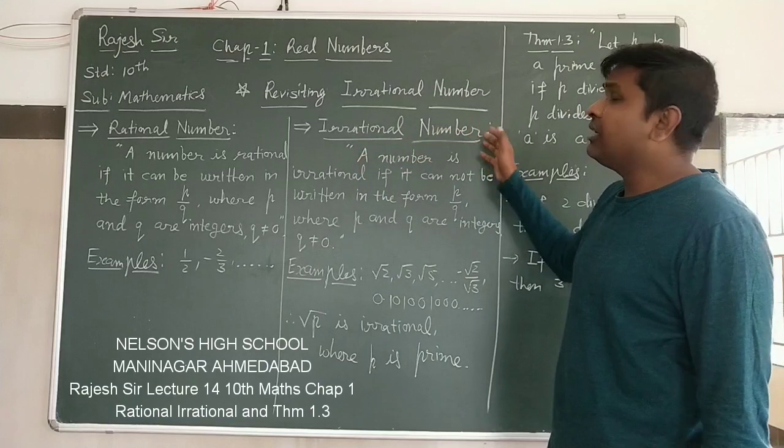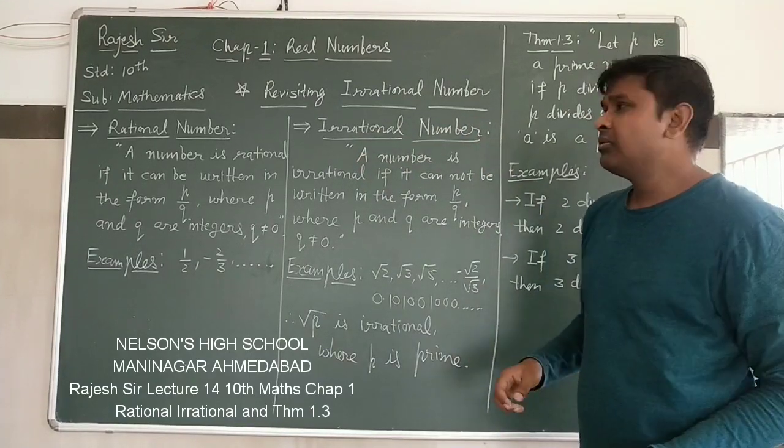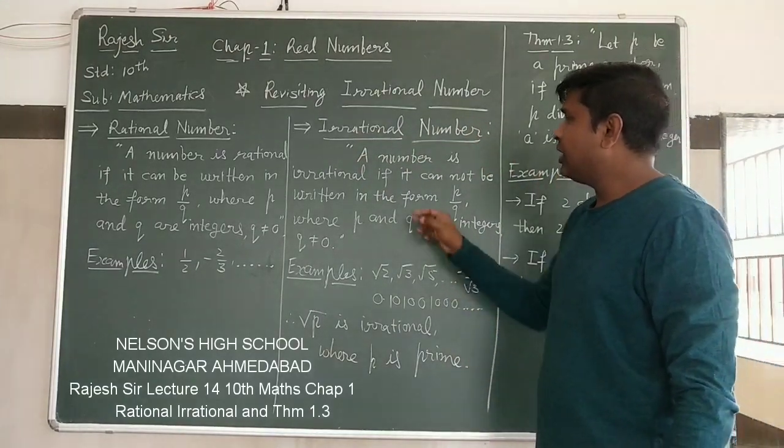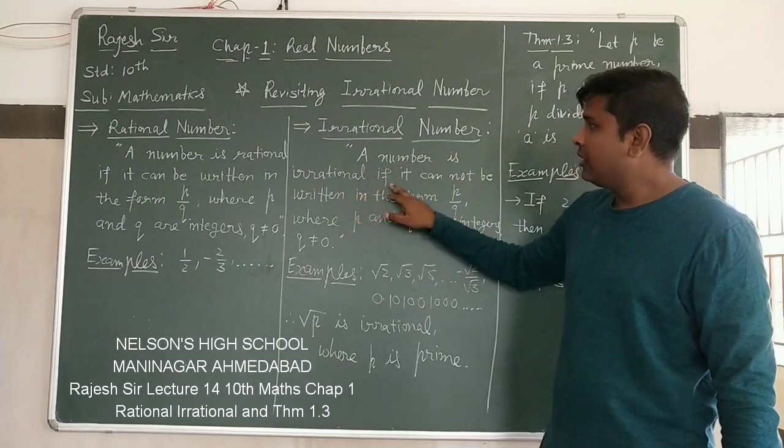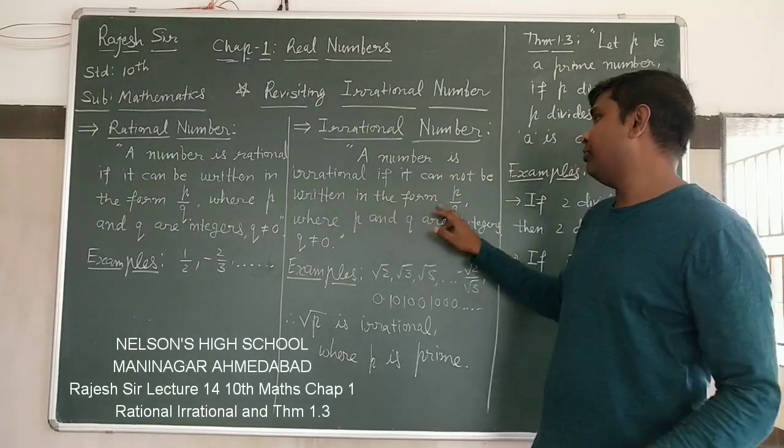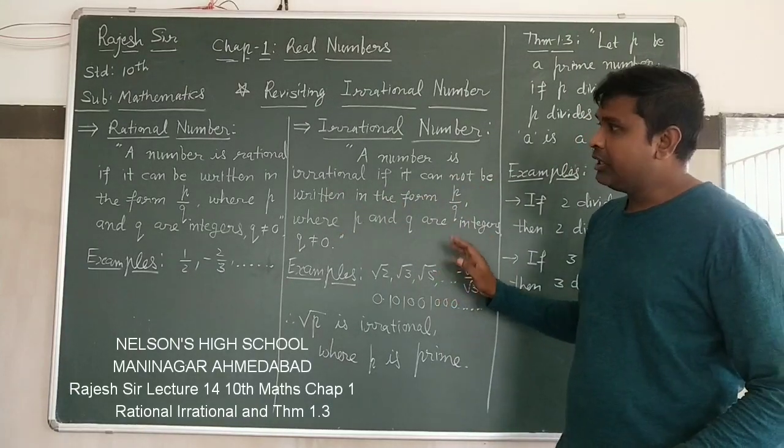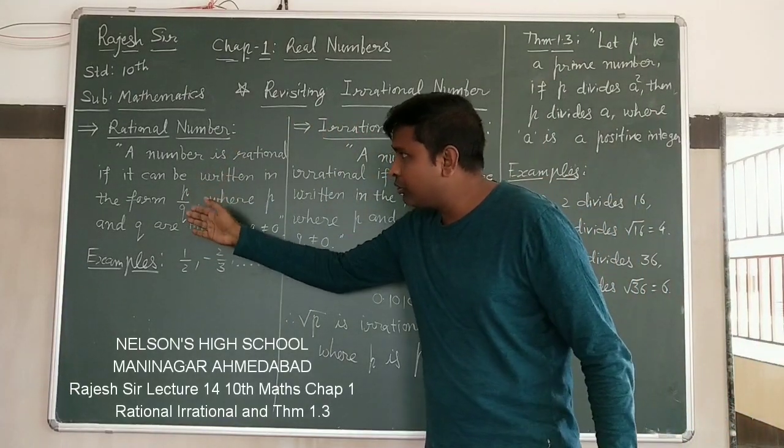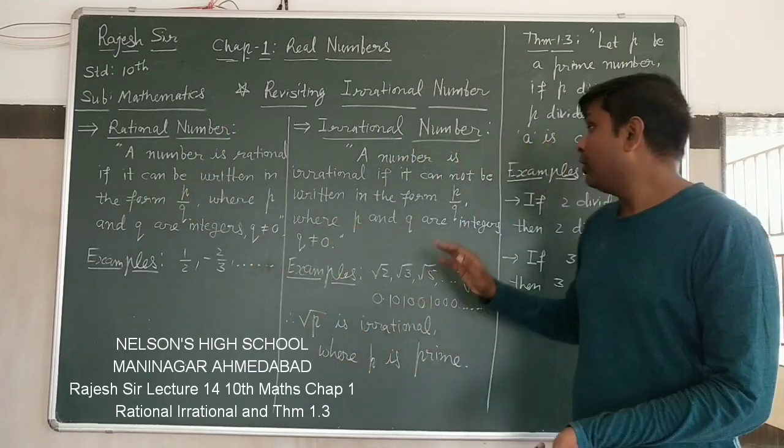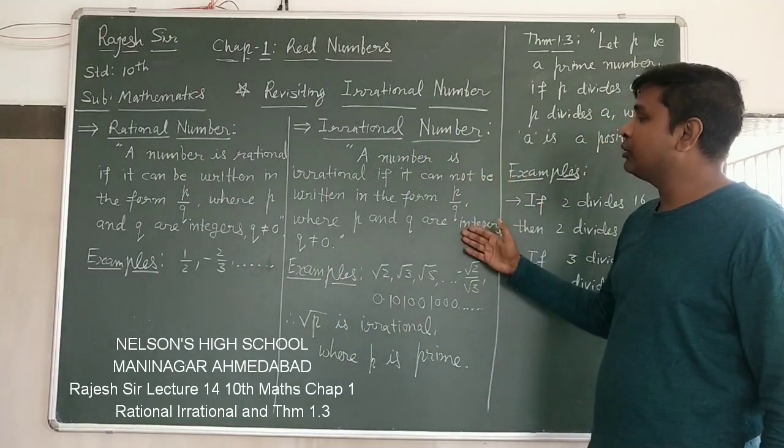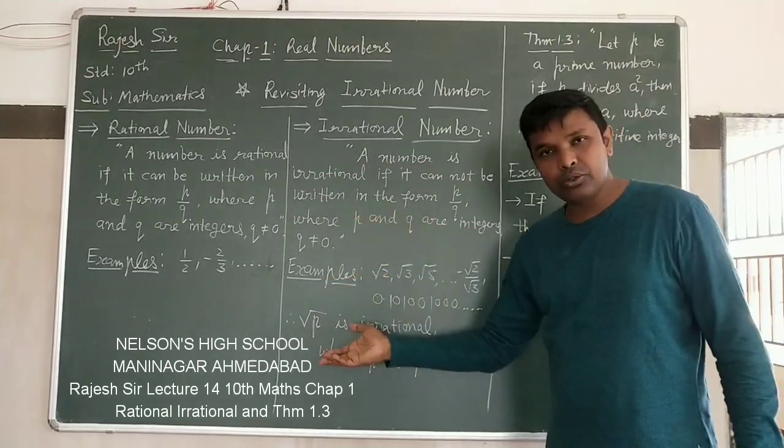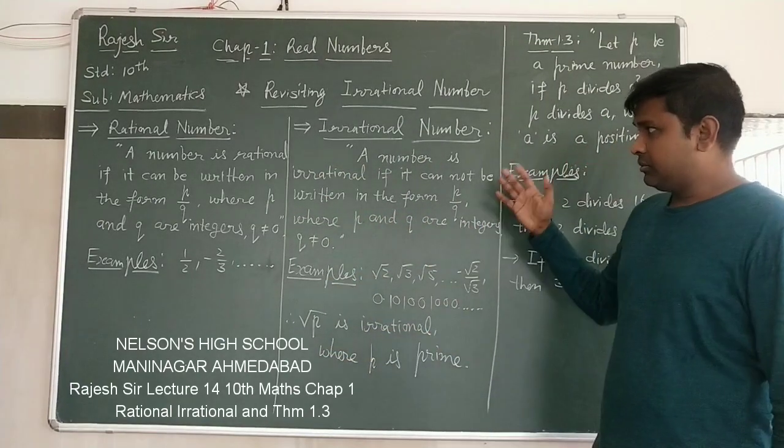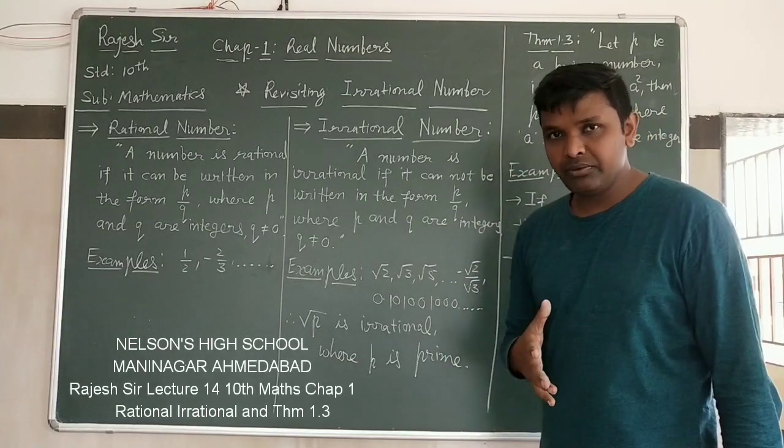Similarly, the irrational numbers also we have understood, but again recall the definition. A number is irrational if it cannot be written in the form of P upon Q. If it can be written in the form of P upon Q, rational. If it cannot be written in the form of P upon Q, where P and Q are the same conditions, integers Q not equal to 0, then that type of numbers are called irrational numbers.